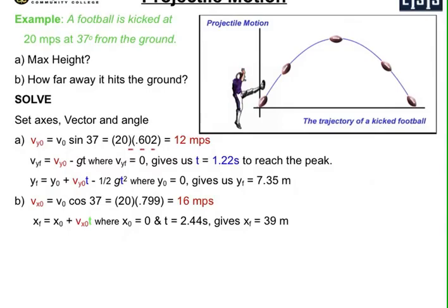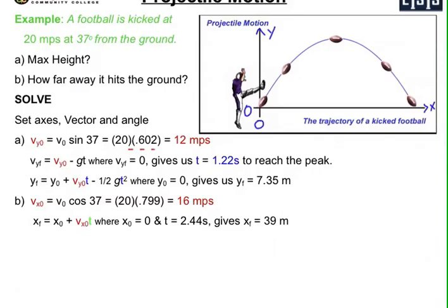Let's do an example. Suppose a football is kicked at 20 meters per second at 37 degrees from the ground. We're looking for: what is the maximum height achieved, and how far away does the football hit the ground? The first thing we want to do is set our axis, our vector, and angle. We set our zero points at the origin — y-axis positive upward, x-axis positive to the right. The angle is 37 degrees, and the initial velocity vector is 20 meters per second.